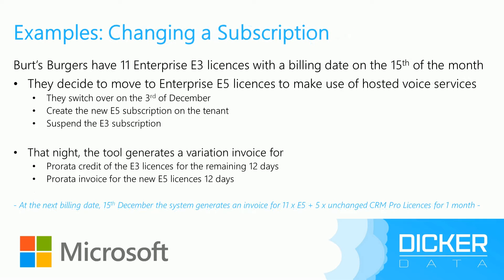Now what happens if we switch from one subscription to another? This one's a little bit different — the tool will credit and pro rata charge for the two different license types. On the 3rd of December, the customer is switching from E3 licensing to the new Enterprise E5 licenses. They create the new E5 subscription on the tenant, then suspend the E3 ones as well. That night, the tool generates a variation invoice: it pro rata credits the E3 licenses for the remaining 12 days in that month, and also generates a pro rata invoice for the new E5 licenses for 12 days in advance. At the next billing date on the 15th of December, the system automatically generates an invoice for 11 E5 licenses and the 5 unchanged CRM Professional licenses for one month in advance.